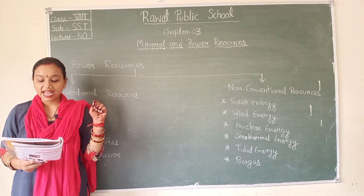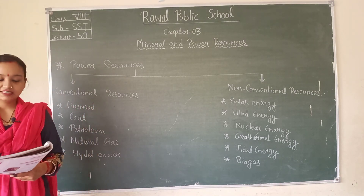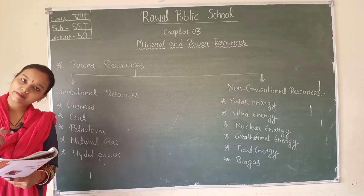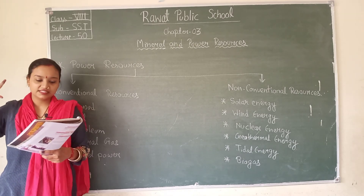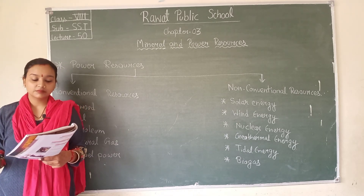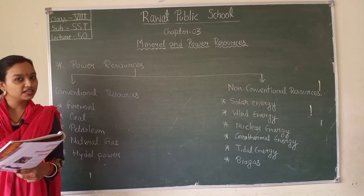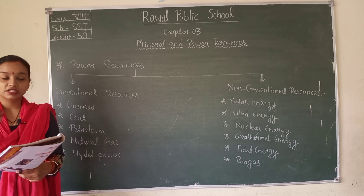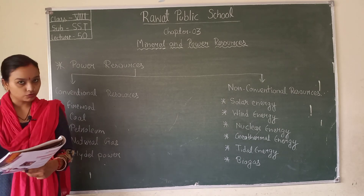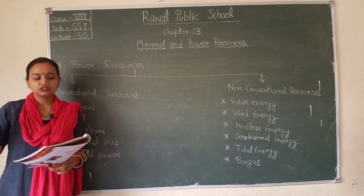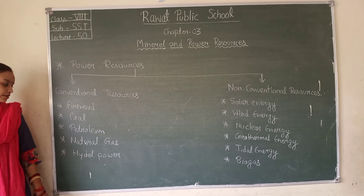Petroleum is very valuable for us. Chief petroleum-producing countries are Iran, Iraq, Saudi Arabia, and Qatar in Asian desert regions. Other producers include USA, Russia, Venezuela, and Algeria. These are coastal areas where petroleum is produced. In India, petroleum is found in Digboi, Assam, Bombay High, coastal areas, and the deltas of Krishna and Godavari.